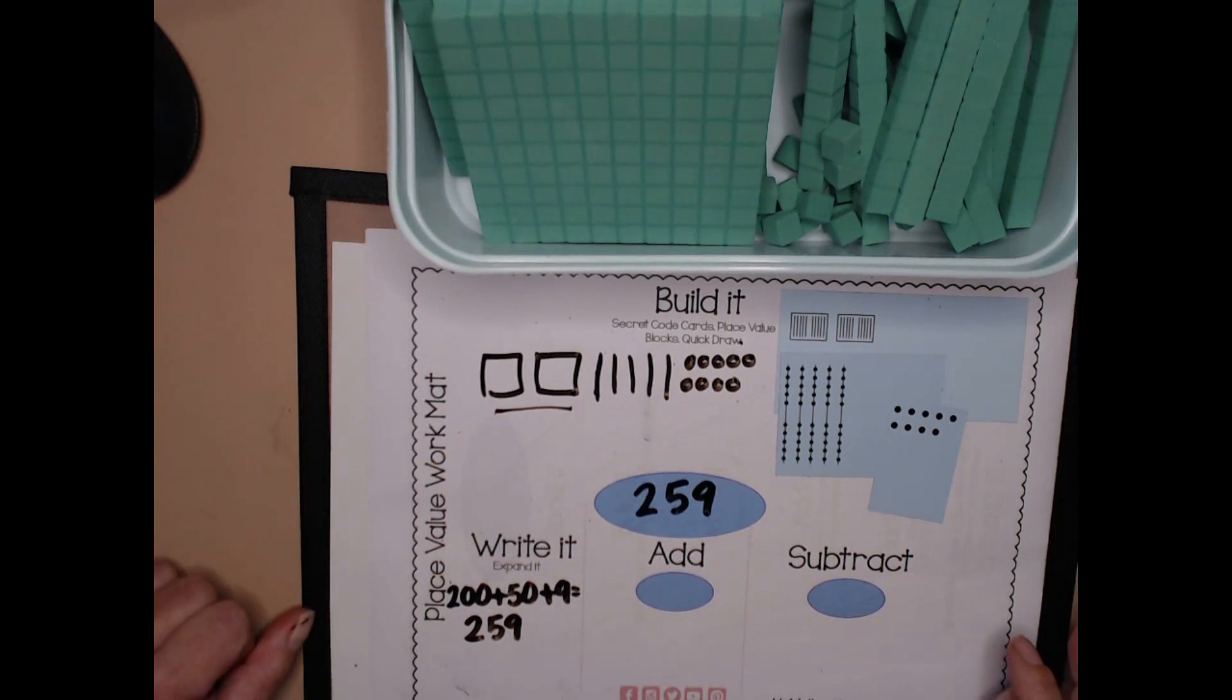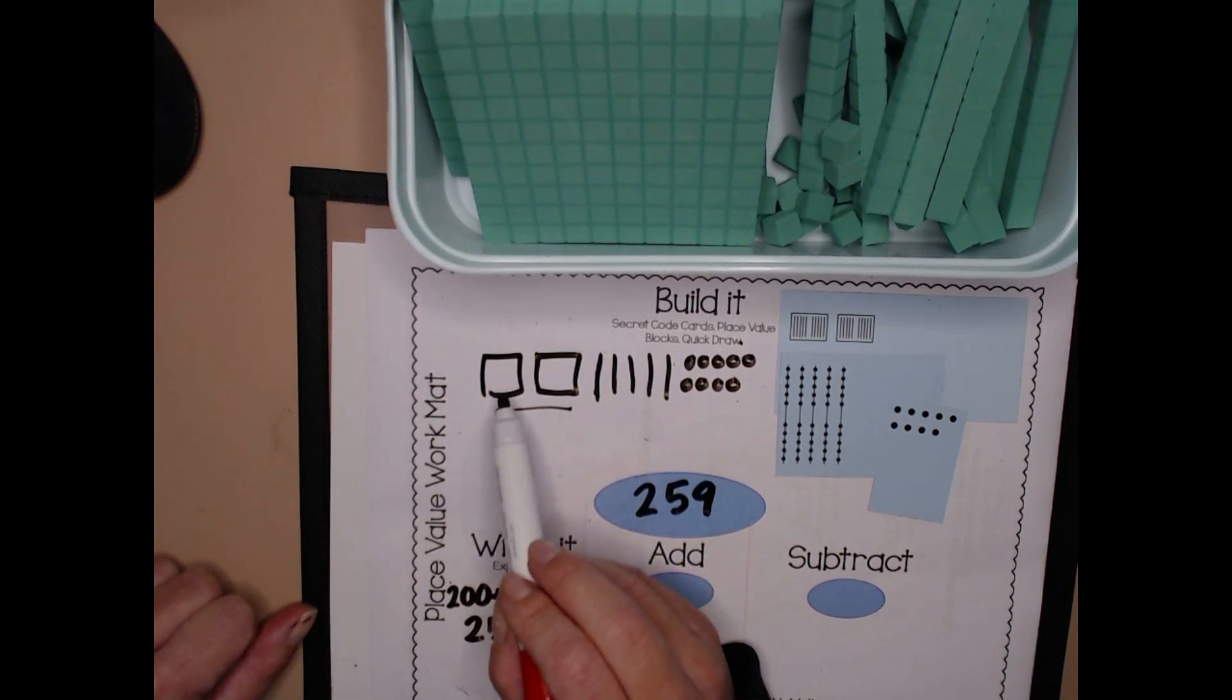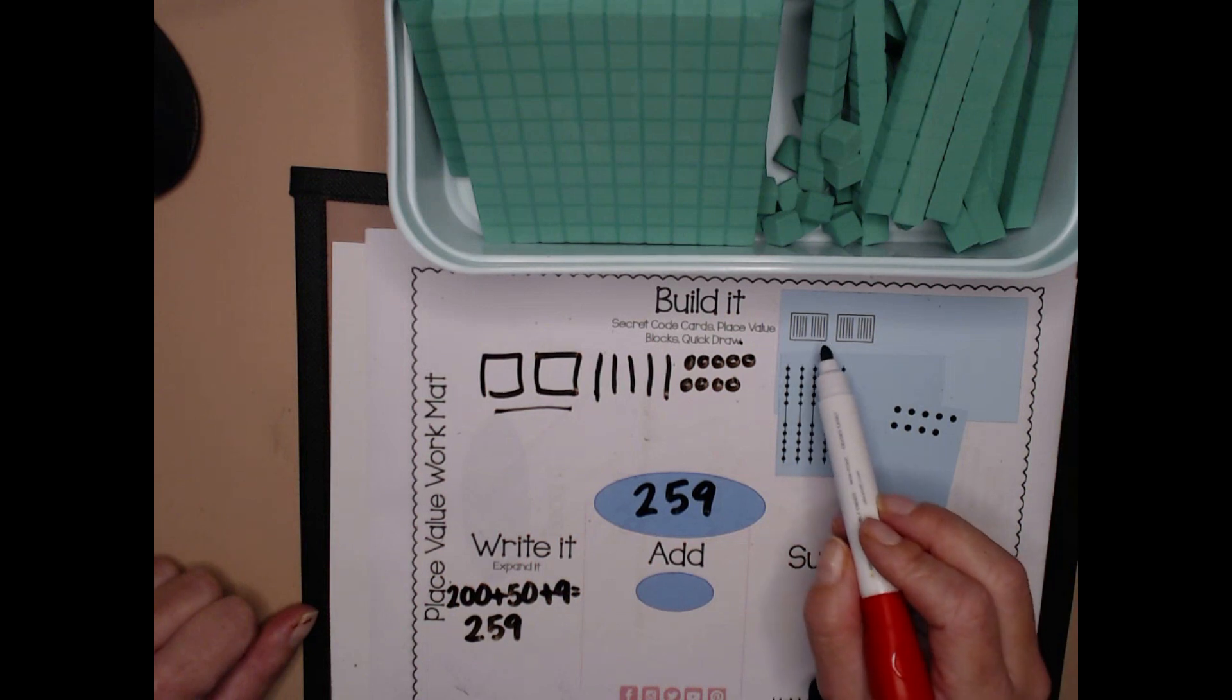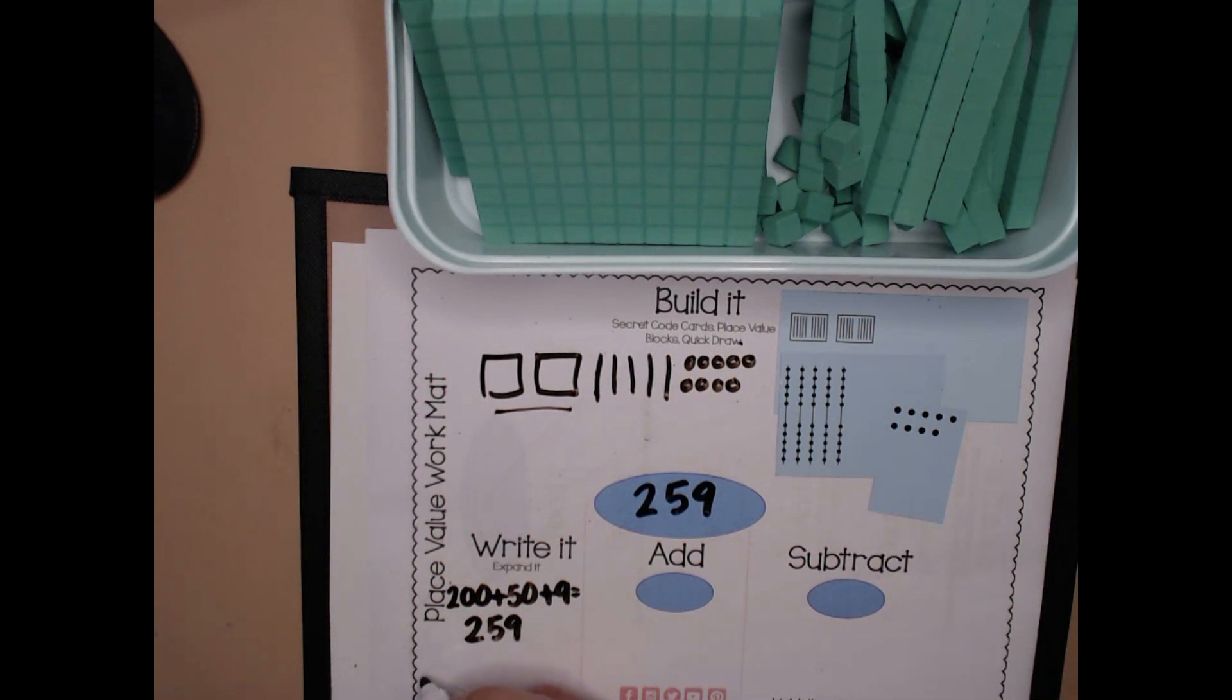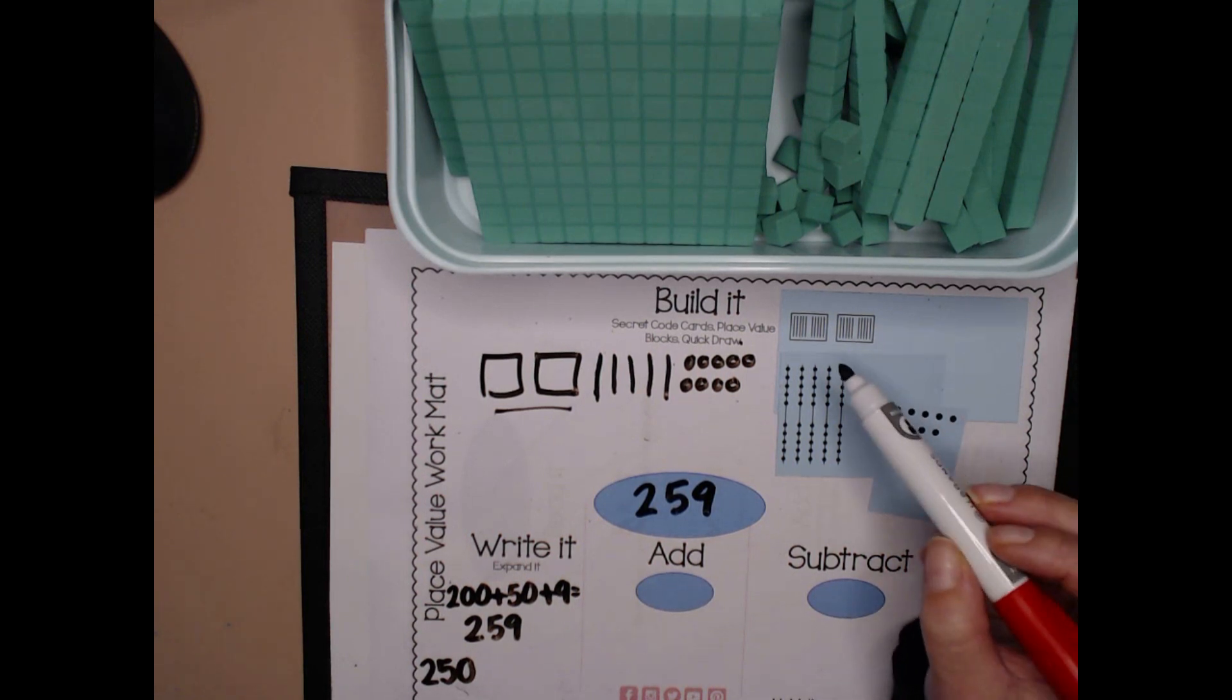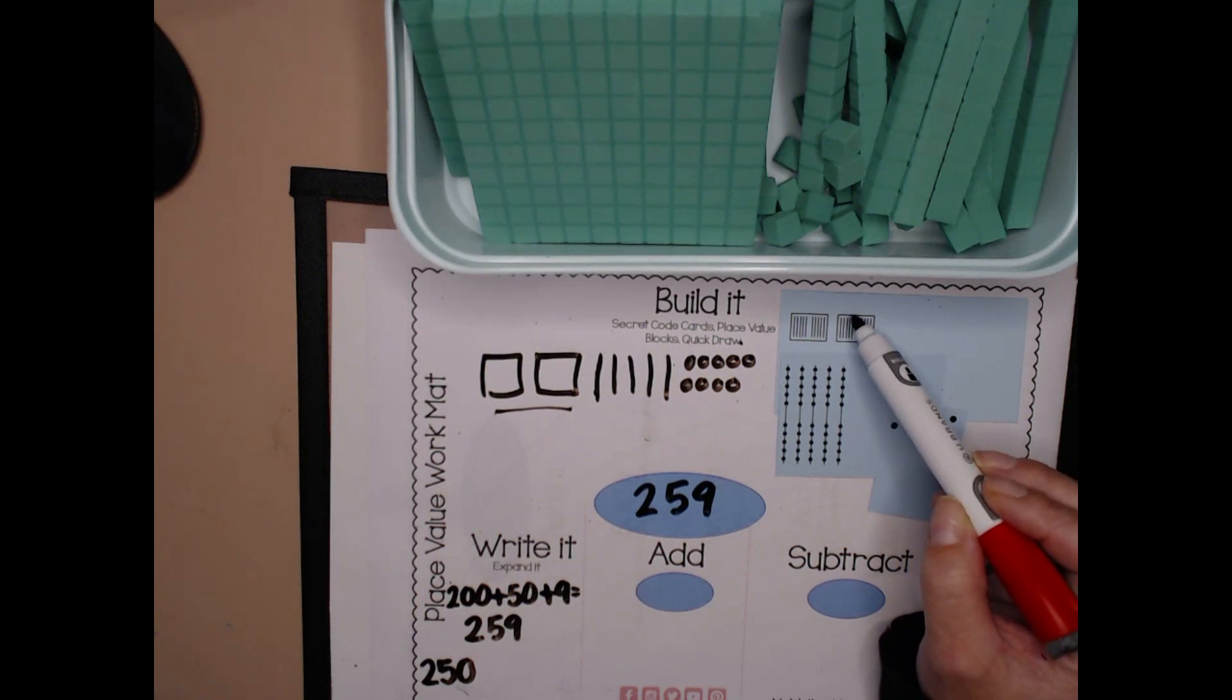But I'm also going to write it another way. What if I wrote it just as 10s and 1s? How many 10s and 1s are in my number? Well, I can see 5 tens, but aren't there more tens than 5? There are. There are 10 here, and there are 10 here, just like you can see in my secret code cards. So really, I have 10, 20, 21, 22, 23, 24, 25. I have 25 tens, and I know that tens ends in a 0. 25 tens is the same as 250. Let's count. 10, 20, 30, 40, 50, 60, 70, 80, 90, 100. 110, 120, 130, 140, 150, 160, 170, 180, 190, 200.